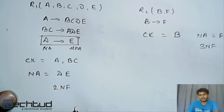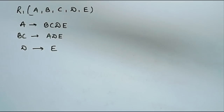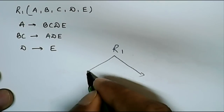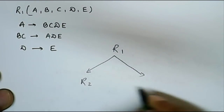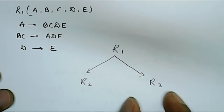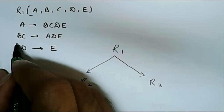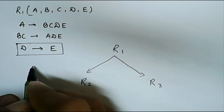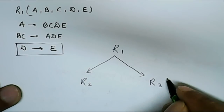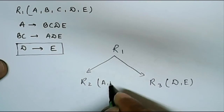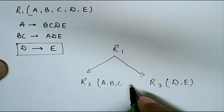The highest normal form for R1 is second normal form. To upgrade R1 to third normal form, we will break it into two relations — let's call them R2 and R3. The functional dependency D determines E, which is causing the problem, will be separated into its own relation. We will keep D and E in R3, and keep A, B, C, and D in R2.